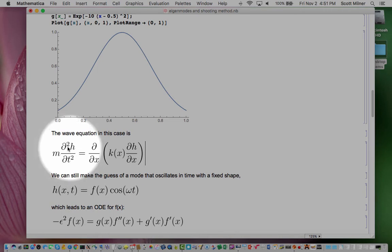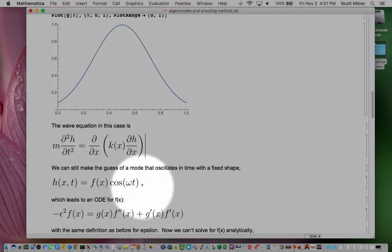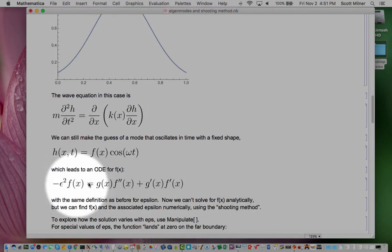plug into now this different wave equation, and so on the left, again, the cosine gets hit twice by the time derivative and gives back minus cosine times omega squared, and the f is not touched. And on the right, the cosine goes through these space derivatives because it doesn't depend on space, but the f gets taken derivatives here and there, and the k, because it depends on x, also gets a derivative taken of it. When the dust settles from all that, you get an equation that looks like this.